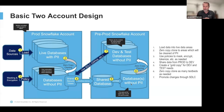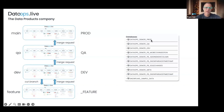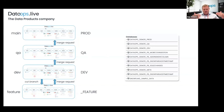That pattern is very common and still much faster than alternatives like full cross-account copies or unloading and reloading data. One quick question from the audience: does zero copy clone require a warehouse? That is a cloud services operation, so it doesn't require a running warehouse — that's correct. Now I'll bring in the DataOps perspective. What we do in DataOps is take that underlying primitive — zero copy clone — and build an environment management system on top of it.